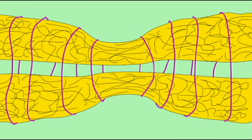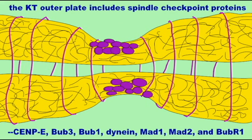The outer kinetochore plate also includes a number of different spindle checkpoint proteins.